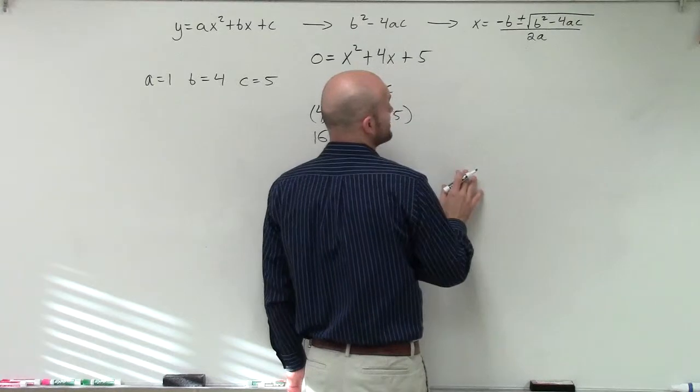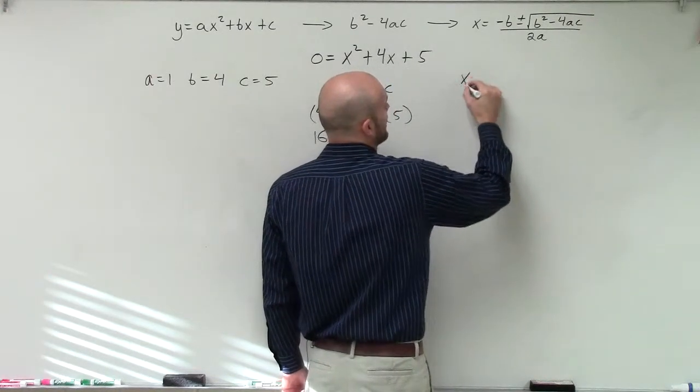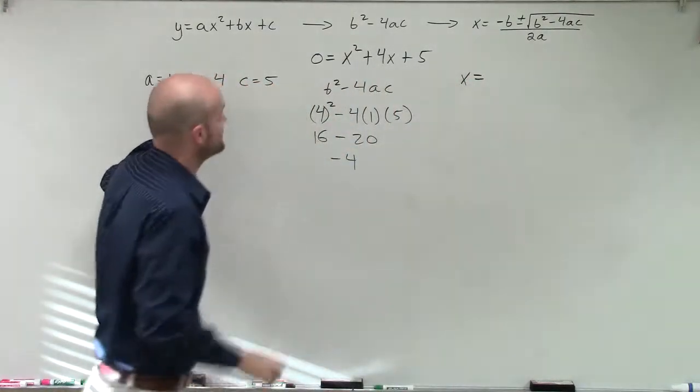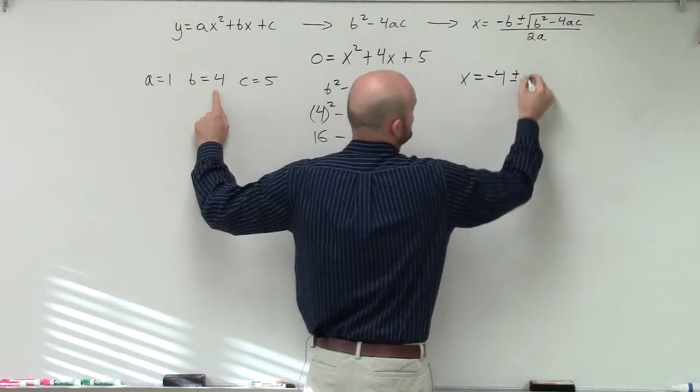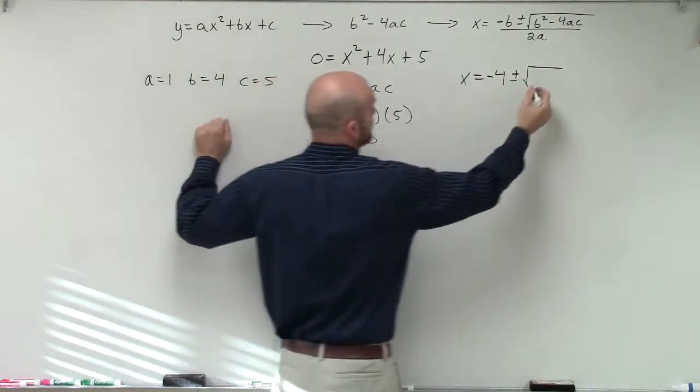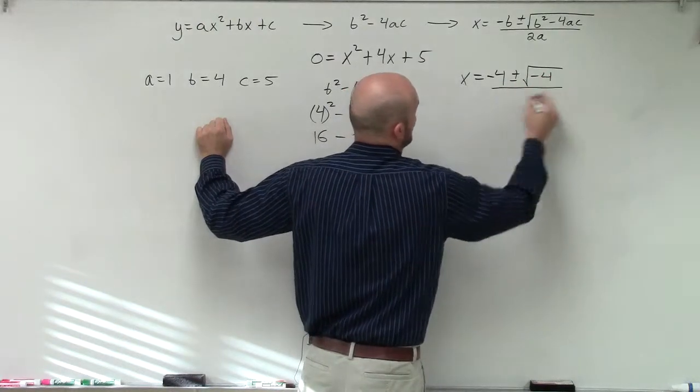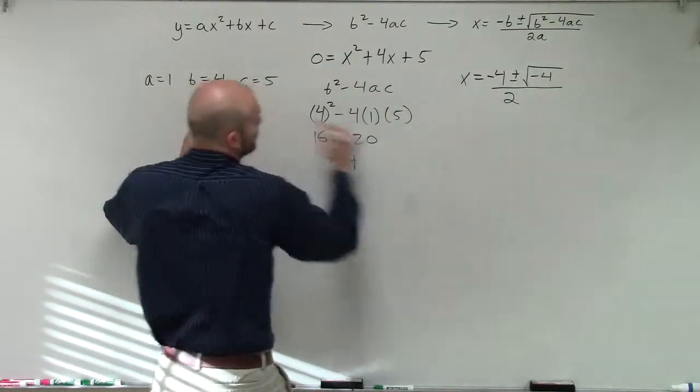Now I'm just going to complete the rest of the quadratic formula. So x equals opposite of b, so that's going to be negative 4, plus or minus the square root of negative 4, divided by 2 times a, which is 1.